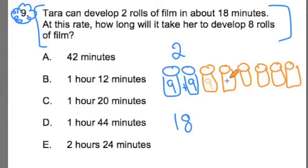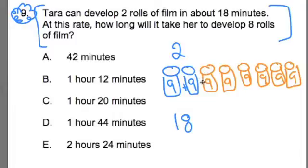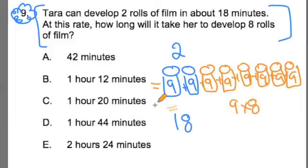Now each one is nine. What I'm doing is very important because I'm solving this visually, and I'm using model drawing as a way to help me solve a problem like this. That visual aid is very, very important. So now I could add them all up, or I could just do nine times eight and get the same answer — and that would be 72. It's going to take a total of 72 minutes to develop eight rolls, because we have a total of eight rolls.